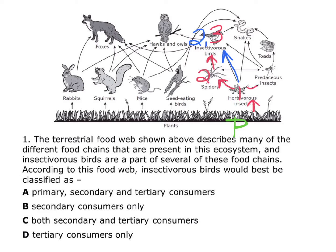You can also go one other way. If you go to the right, since predaceous insects eat primary consumers, they're secondary consumers. And insectivorous birds eat those, which would also make them tertiary consumers. Those are all the arrows pointing toward the insectivorous birds — meaning that's all they eat. Notice they don't eat plants, so they can't be primary consumers, and A cannot be correct. They aren't just secondary consumers — we've established they're both secondary and tertiary. So by labeling this food web, C is the correct answer.